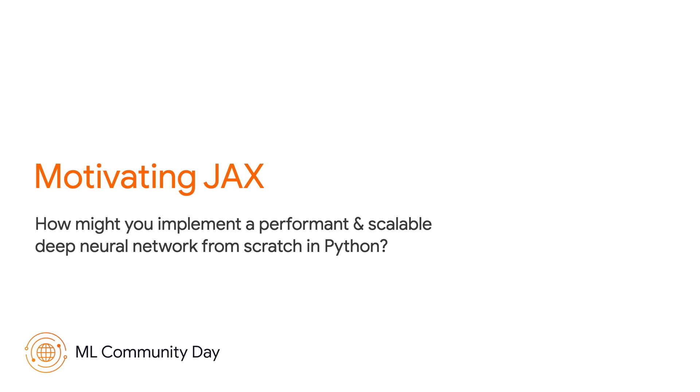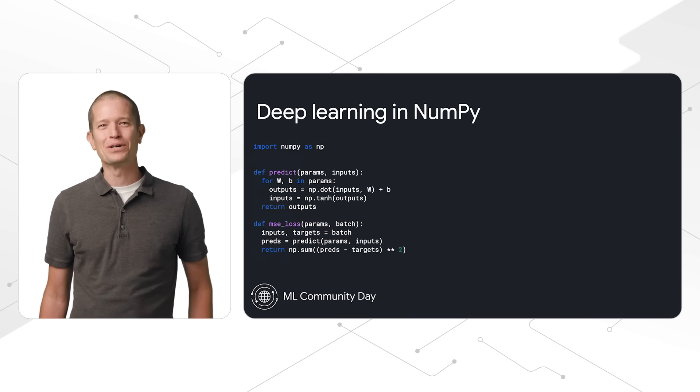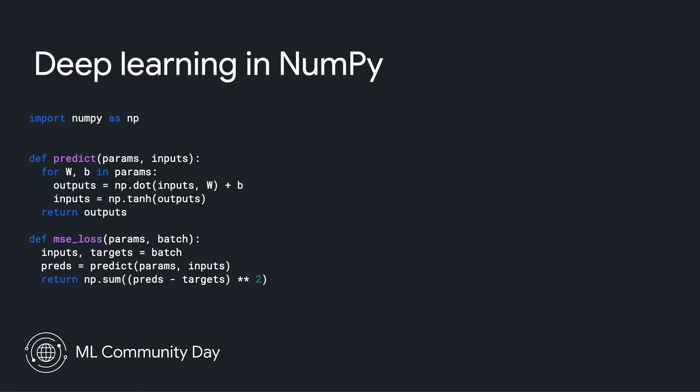Let's step back and motivate JAX a little bit. How might you implement a performant and scalable deep neural network from scratch in Python? Usually, Python programmers would start with something like NumPy, because it's this familiar array-based data processing language that's been used literally for decades. If you were trying to create a deep learning system in NumPy, you might start with a predict method — a feedforward neural network that does a sequence of dot products and activation functions to transform inputs into outputs. The next thing you need is a loss function, such as a mean squared error loss.